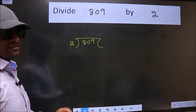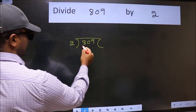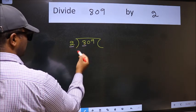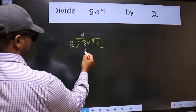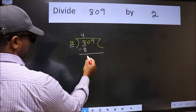This is your step 1. Next. Here we have 8 and here 2. When do we get 8 in 2 table? 2 fours 8. Now we should subtract. We get 0.